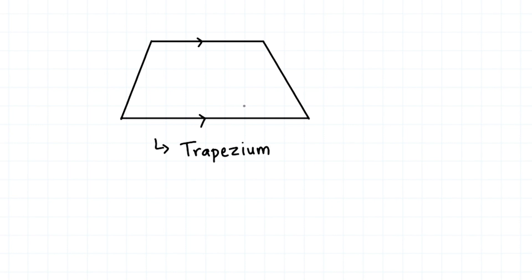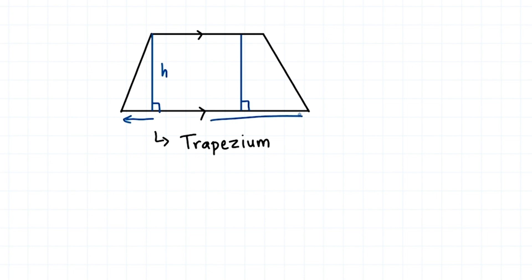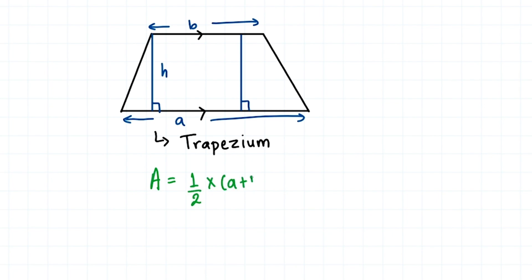How do we find the area of a trapezium? We need the height of the trapezium — that is, the perpendicular distance between the two parallel lines, at 90 degrees. Usually the height is drawn from one endpoint of the upper side, but it can be drawn anywhere between the parallel lines as long as it is 90 degrees. Let's call the bottom parallel side A, the upper side B, and the height H. Then the formula is 1/2 times (A + B) times height.